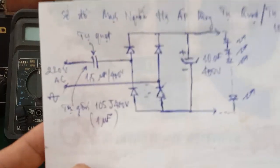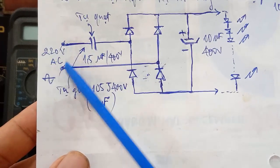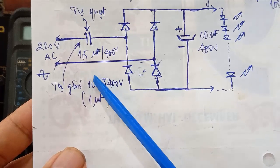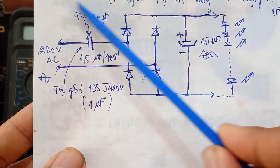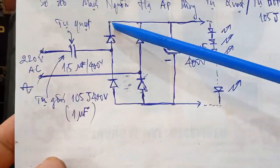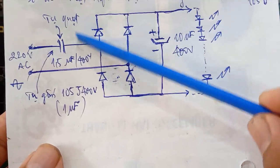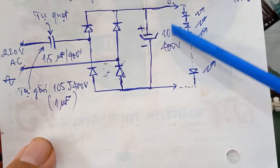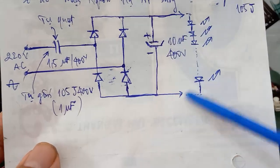Đây là sơ đồ của mạch hạ áp. Nguồn AC 220V đi vào qua một tụ gốm giá trị 1.5μF 400V - tương đương điện dung 1 microfarad - hoặc các bạn thay thế bằng tụ quạt giá trị 1.5MF 400V. Đưa qua cầu diode chỉnh lưu, tại đây biến điện áp AC xoay chiều thành điện áp DC. Qua một tụ lọc nguồn (tụ hóa) giá trị 10MF 400V, cung cấp trực tiếp cho thanh LED hoặc dây LED.